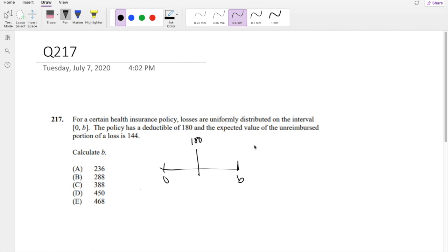The expected value of the unreimbursed portion of a loss, so this means not paid back by insurance, is 144.